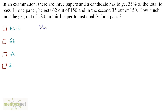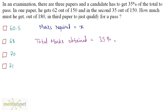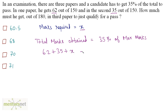Let us consider the marks required is equal to x. We have been given the marks he gets out of 150 and out of 150 and out of 180. Total marks obtained is equal to 35% of the maximum marks — he has to get at least 35% of the total to pass. Total marks obtained are the sum of all marks: 62, 35, and x. So 62 plus 35 plus x is equal to 35% of the maximum marks.